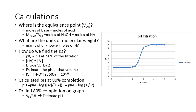We're going to compare this to the actual titration. To compare it, find 80% completion on the graph. That's just the equivalence volume times 0.8. Estimate the pH at that volume and compare it to your calculated value.